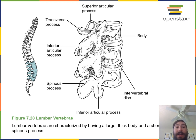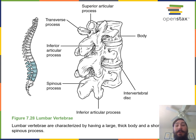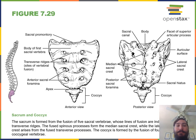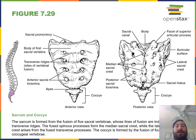Lumbar vertebrae are relatively large — much larger than cervical vertebrae and even a little larger than thoracic vertebrae — because the lumbar vertebrae have to support a relatively large amount of body weight. The sacrum is found in the posterior pelvic region, and just inferior to the sacrum is the coccyx, the tailbone, which is the most inferior of the vertebrae.